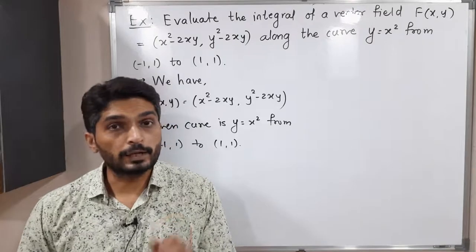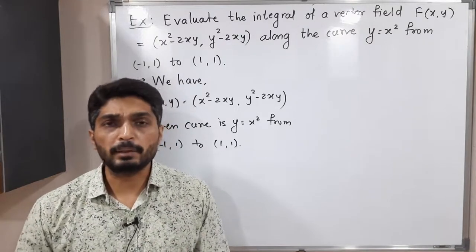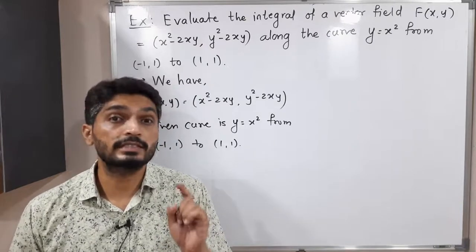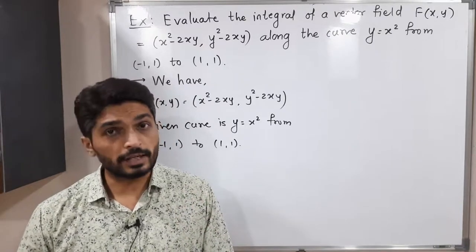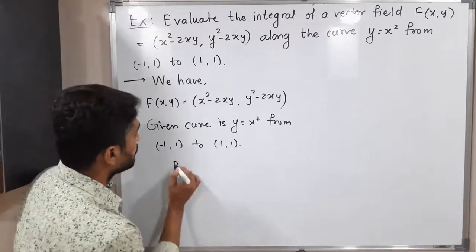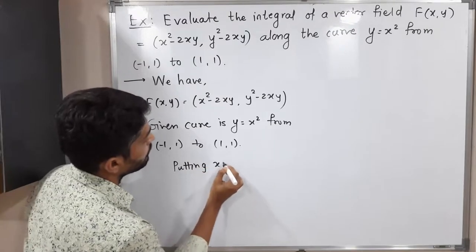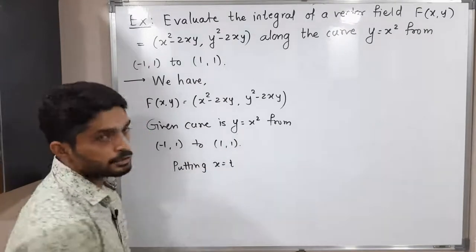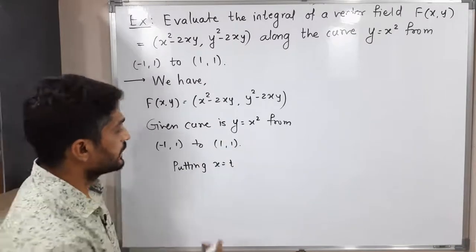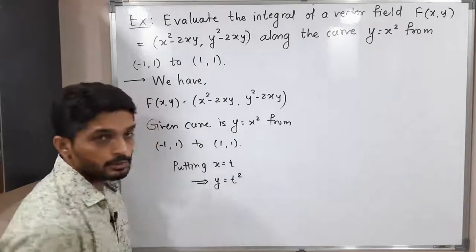After that, I will find a parameterization of the given curve. Parameterization means we express the curve with the help of a single variable. For that, I am going to put x = t. So if we put x = t, obviously we will have y = t².